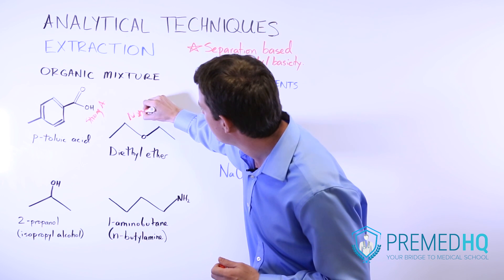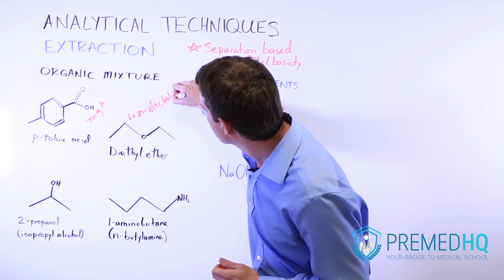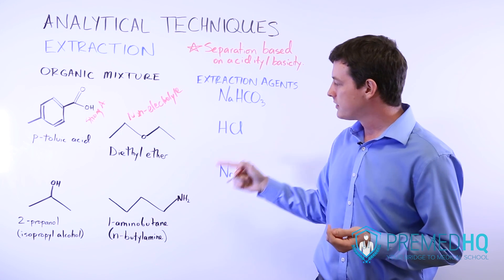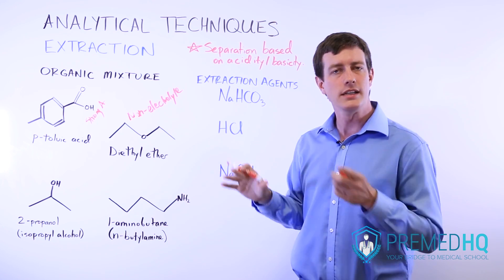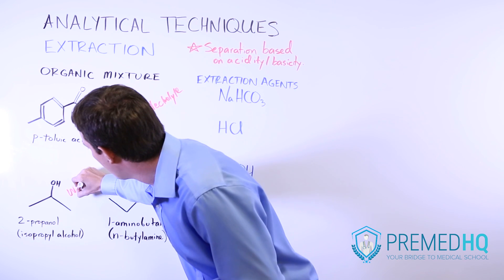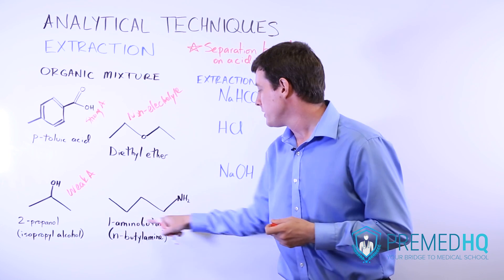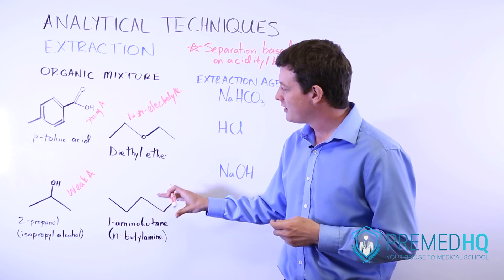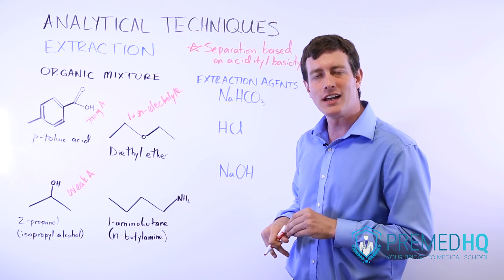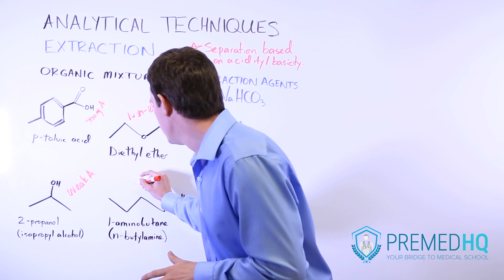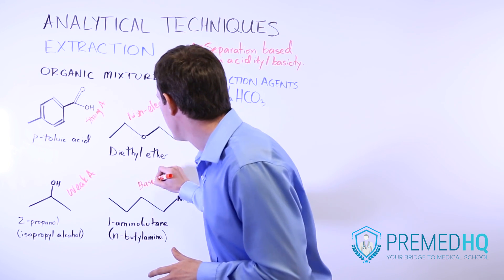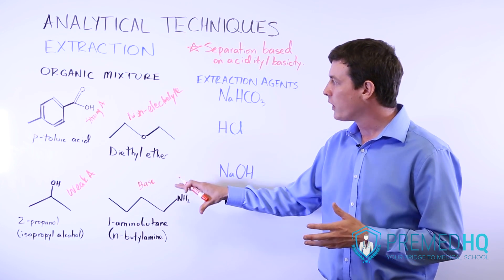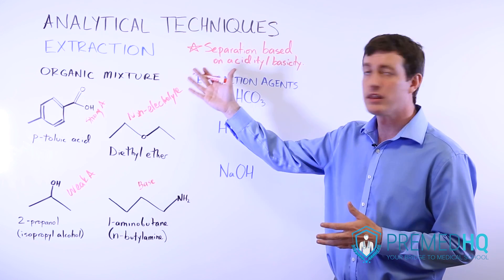Diethyl ether will be your non-electrolyte. 2-propanol, more commonly known as isopropyl alcohol, is going to be your weakly acidic organic compound — the weak acid. And 1-aminobutane, also known as n-butylamine, is going to be your base — you know it's the base because it has an amino group, which is the most common organic base you'll encounter. Amines are generally the organic bases you'll be separating with an extraction procedure.